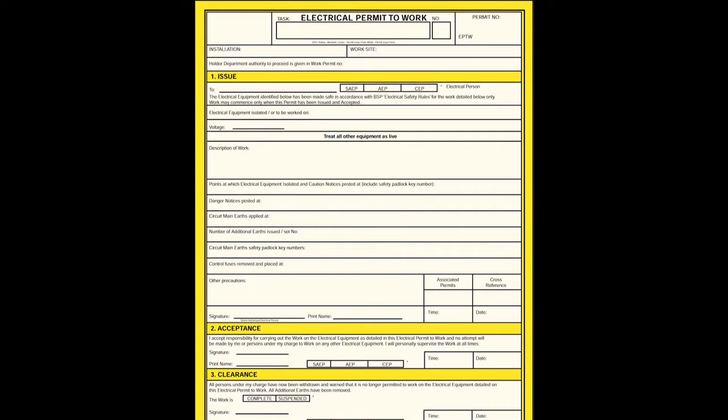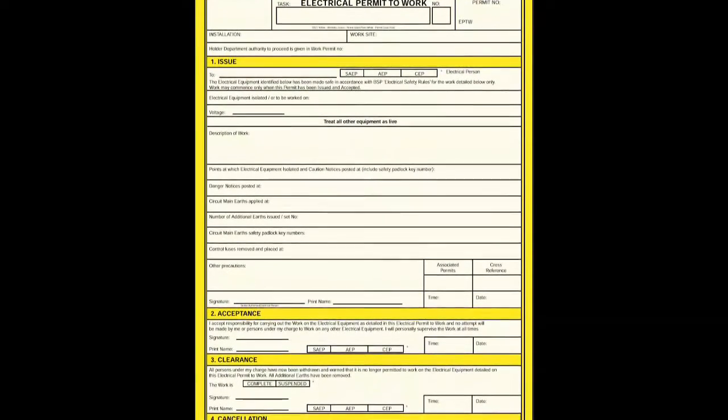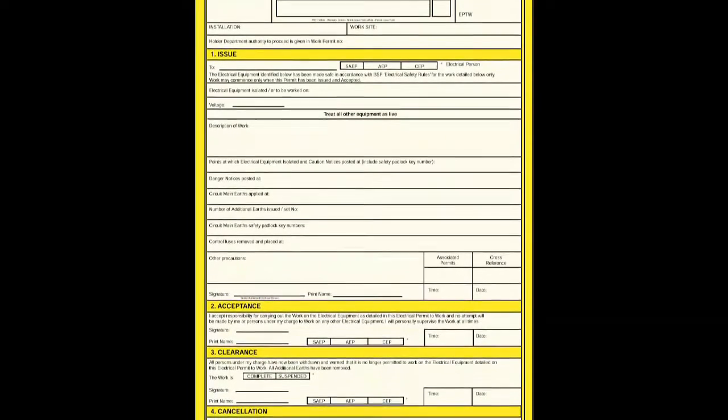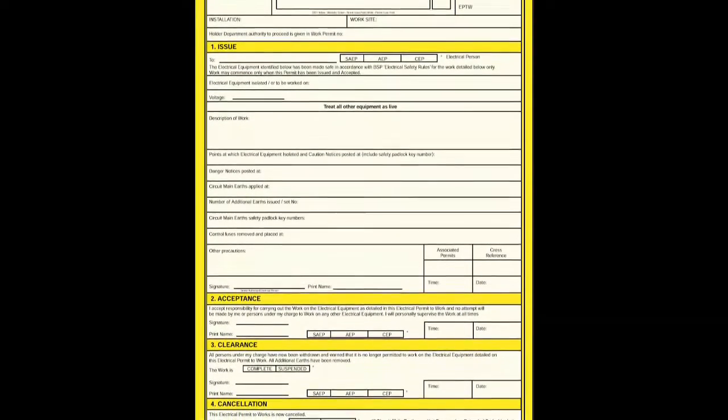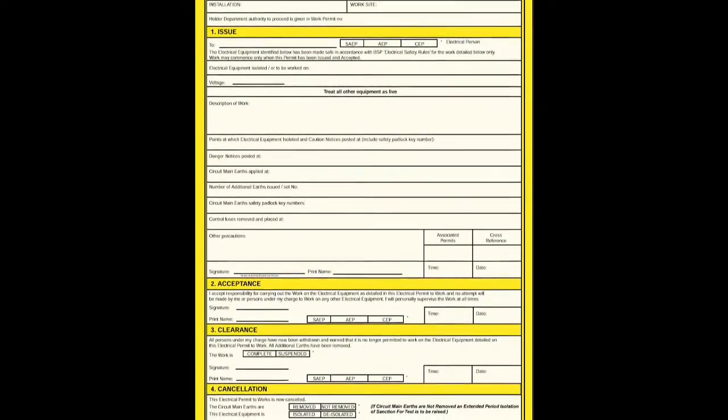A permit to work is a document that controls maintenance work and helps to ensure that all safety procedures have been followed before work commences. The permit is issued by the issuing authority, typically the chief engineer on the vessel or installation.